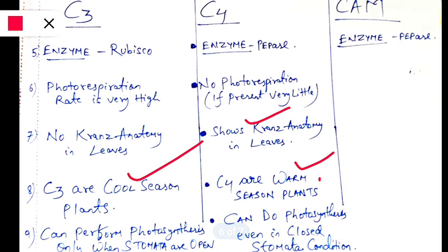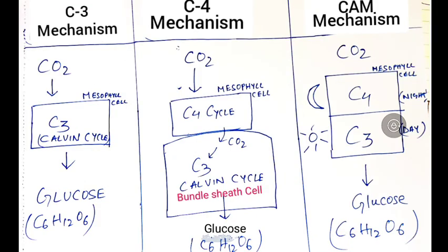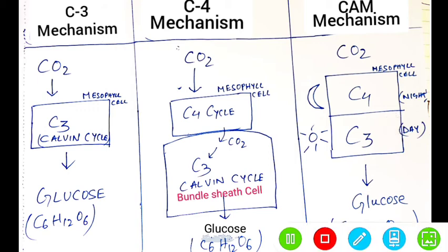C3 plants can perform photosynthesis only when the stomata are open. C4 plants, however, can perform photosynthesis even when the stomata are closed.